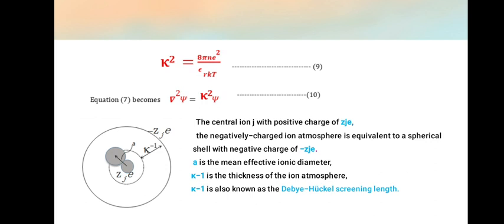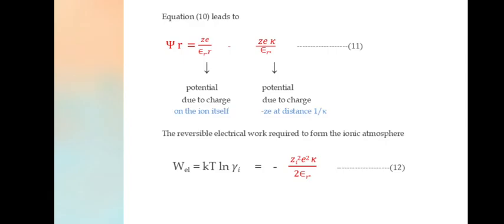κ⁻¹ is also known as Debye-Hückel screening length.